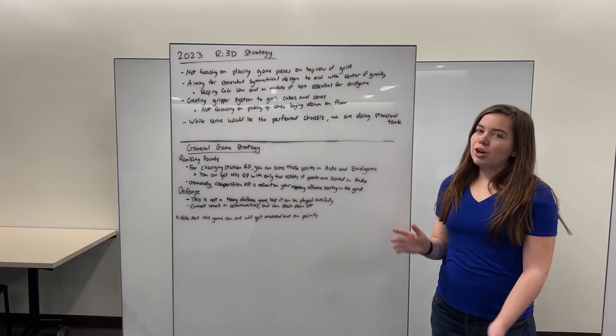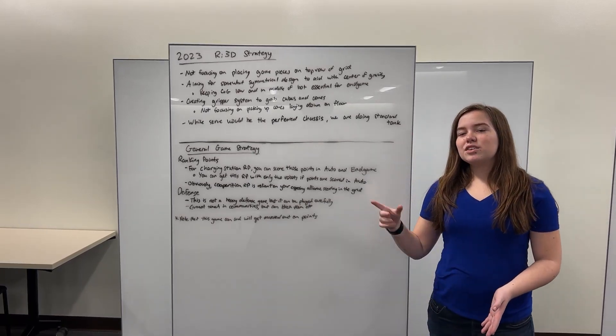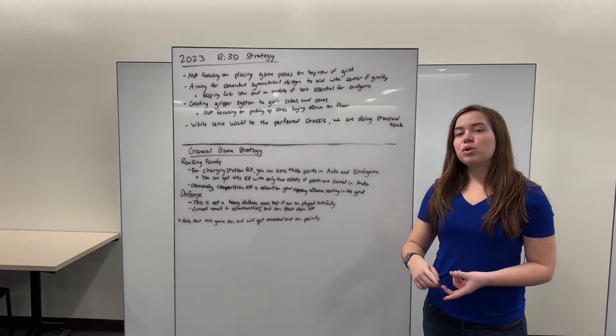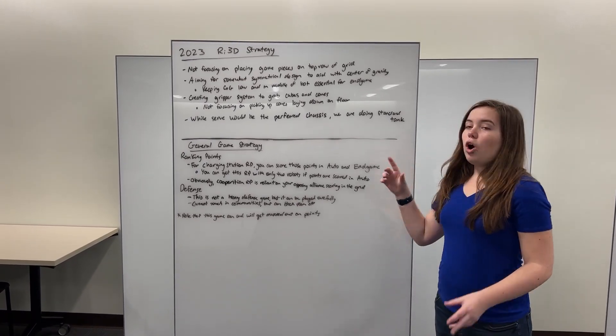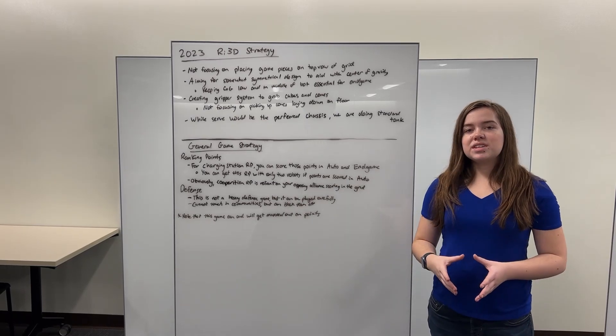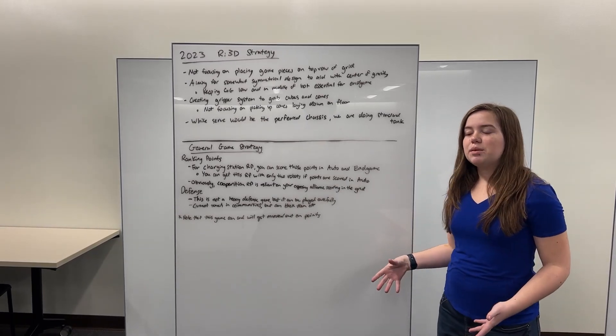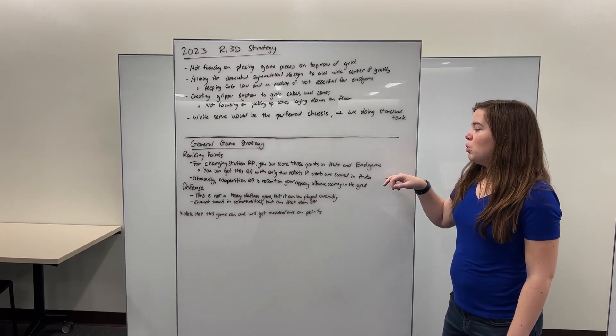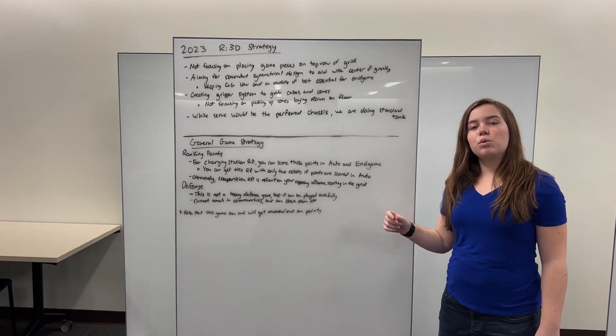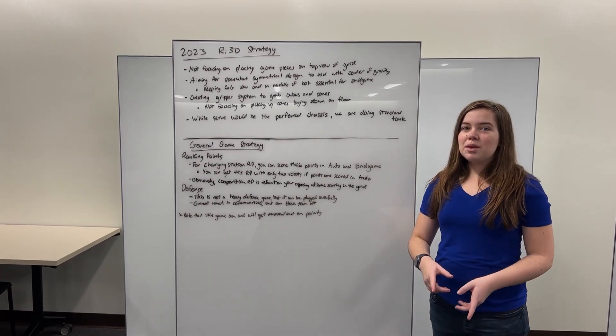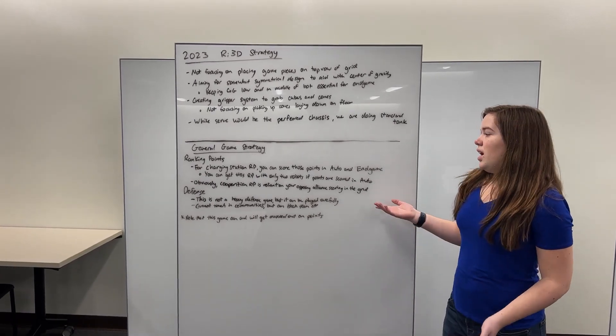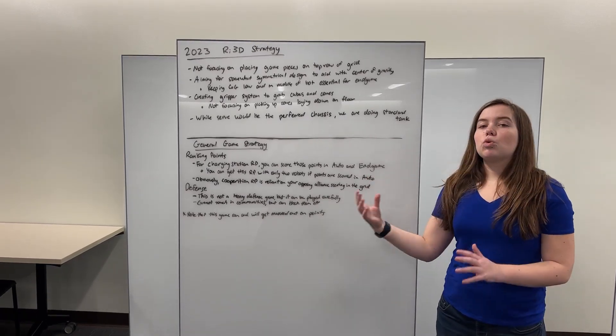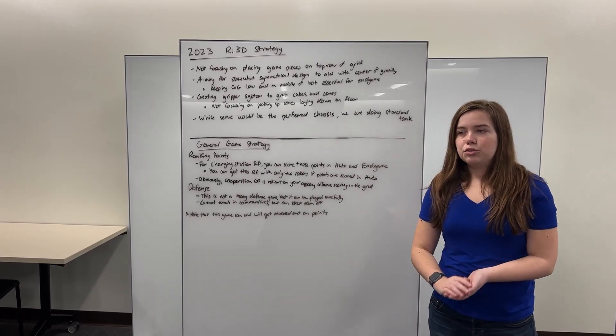So to begin, we have our ranking points, especially pertaining to the charging station points. Now you can score points for the charging station in either autonomous mode or end game. So all of those points when summed together can go towards your own ranking point. So if you do all the math, you can realize that you can get this ranking point with only two robots if you score enough points during the autonomous period. And then obviously the competition ranking point is reliant on your opponent also scoring in their own competition area on the grid.